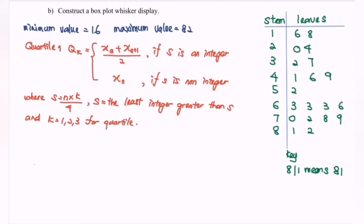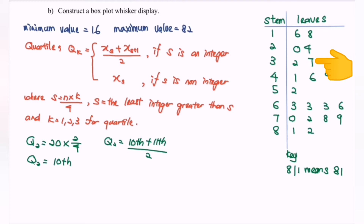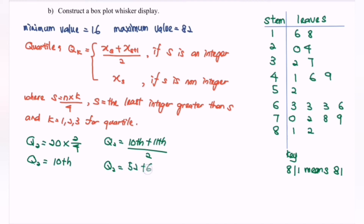Next, find the second quartile or the median. Q2 equals 20 multiplied by 2/4, giving the 10th term. Since 10 is an integer, Q2 equals the 10th term plus the 11th term divided by 2. Continuing from term 6 (37): 41 is 7th, 46 is 8th, 49 is 9th, 52 is the 10th term, and 63 is the 11th term. So Q2 equals (52 + 63) / 2 = 57.5.